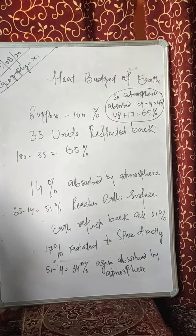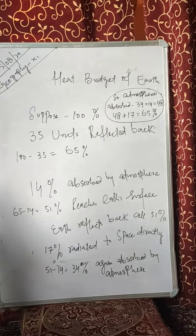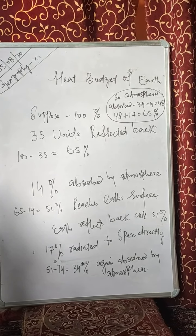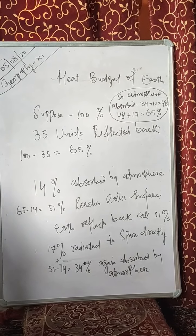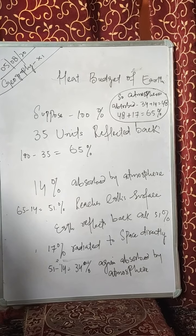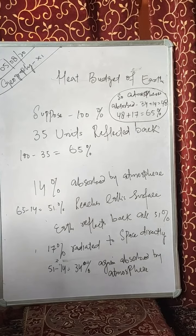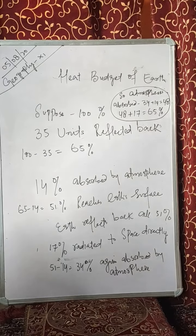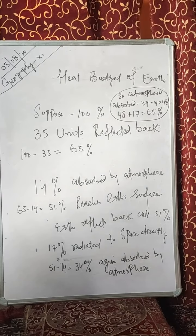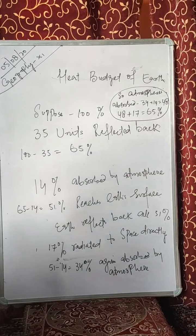This balance is known as the heat budget. This happens only when the amount of heat received by the earth from the Sun equals the amount lost by the earth through terrestrial radiation. Terrestrial radiation means the heat which is radiating back from the earth's surface.